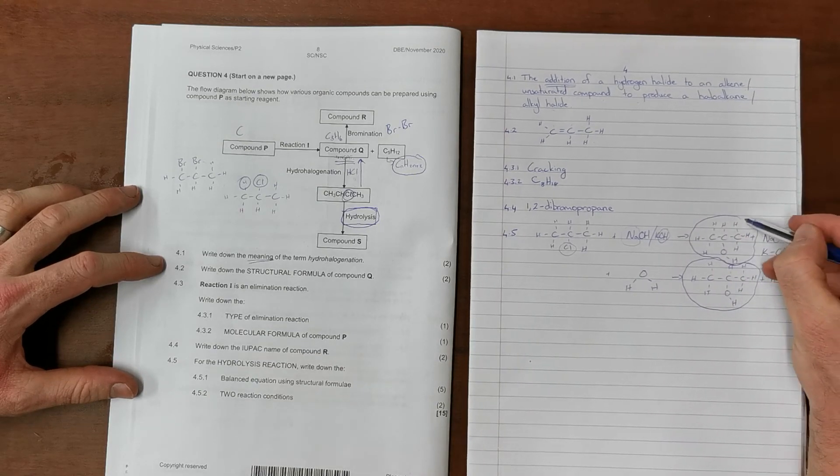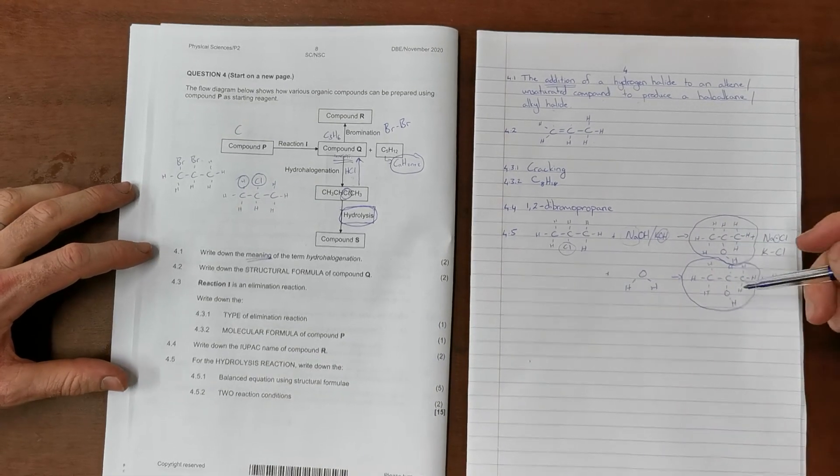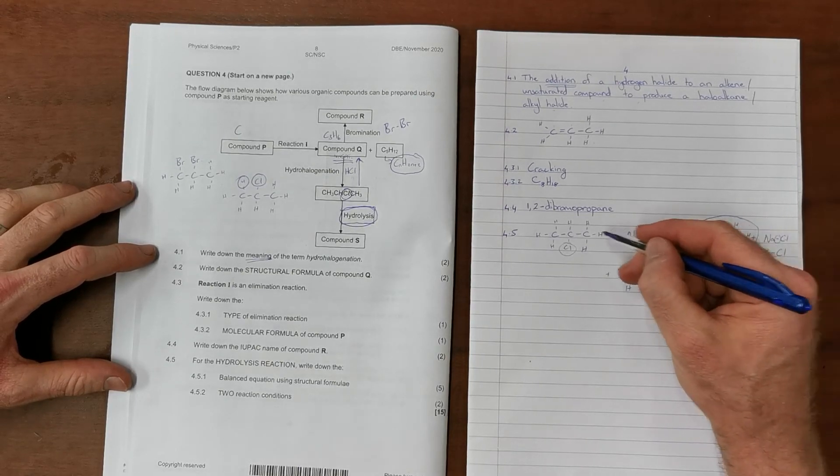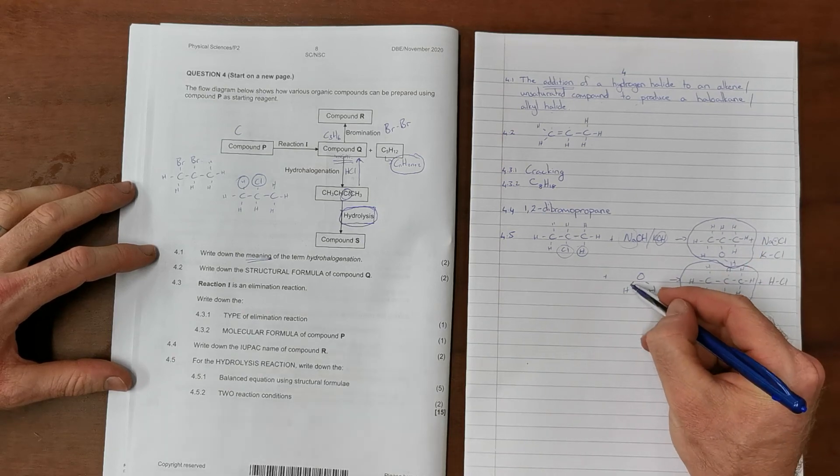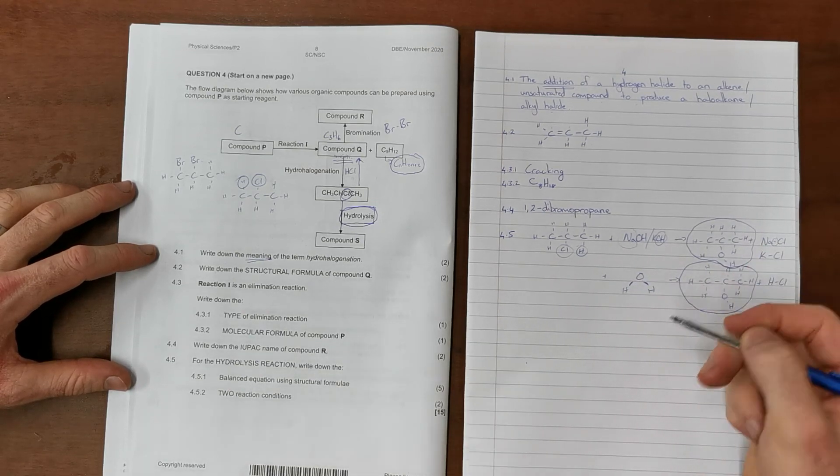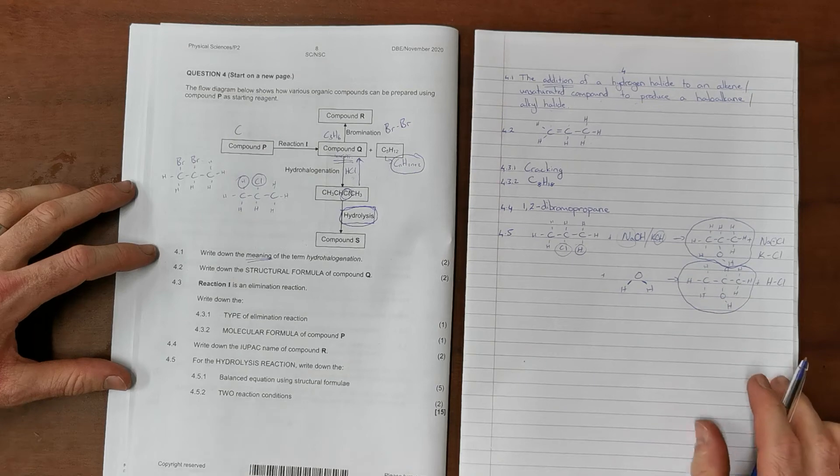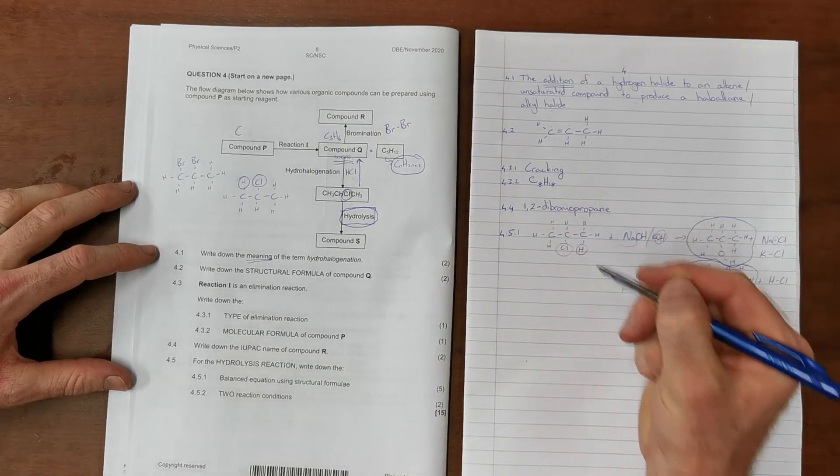Both of them form the same product, they just have different byproducts. So it is important to remember not to leave out any hydrogens, and when asked to draw it in structural formula, you must show bonds between all different molecules. That is question 4.5.1.